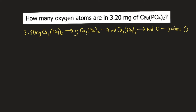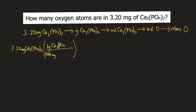Let's do this in detail. Starting from 3.20 mg of calcium phosphate, let's convert that to grams. We know that 1 gram is equivalent to 1,000 mg, so milligrams would cancel and we have grams of calcium phosphate.